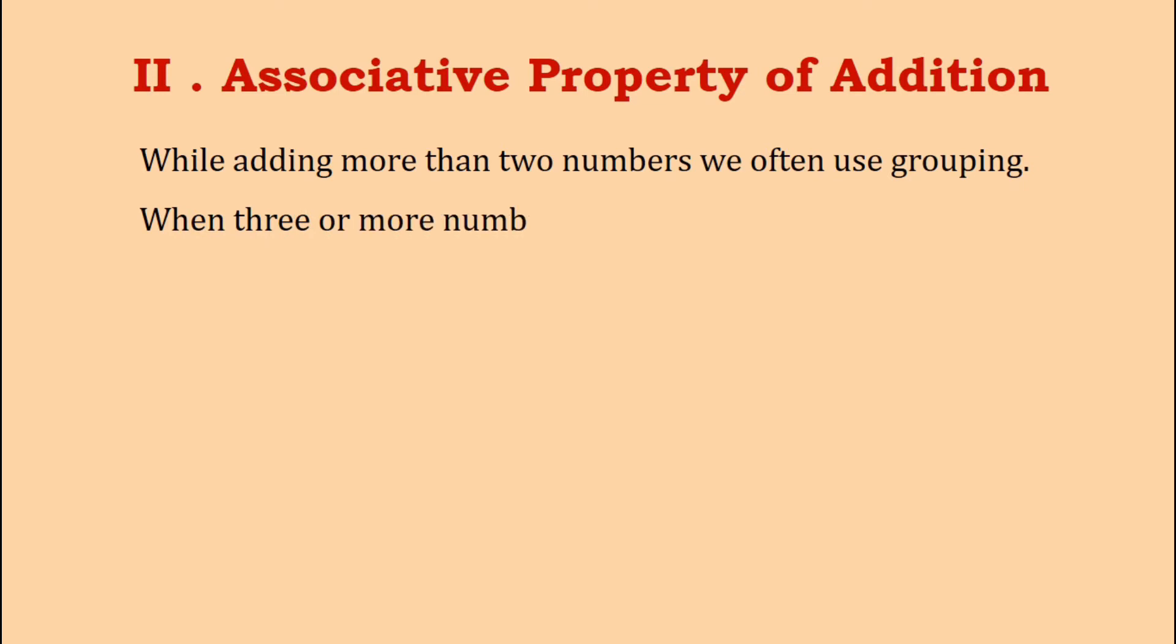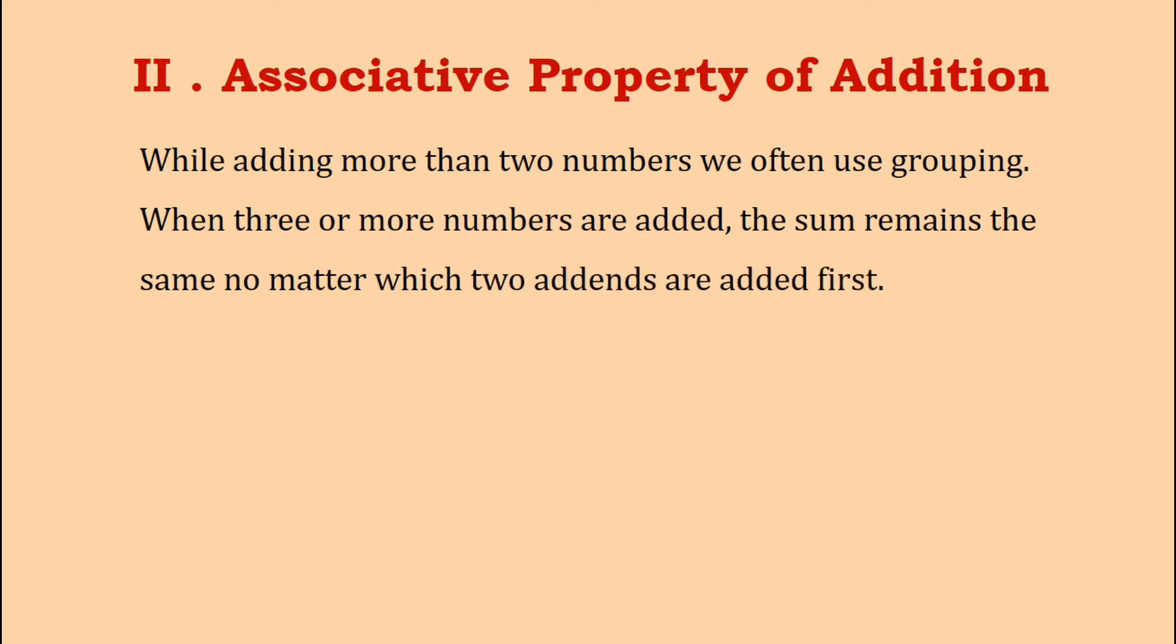According to this property, when three or more numbers are added, their sum remains the same no matter which two addends are added first. Let us clearly understand this property with an example.